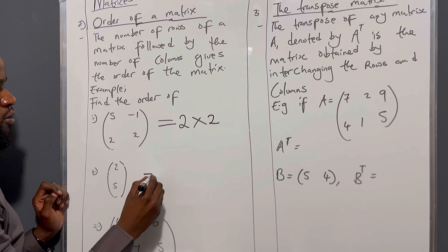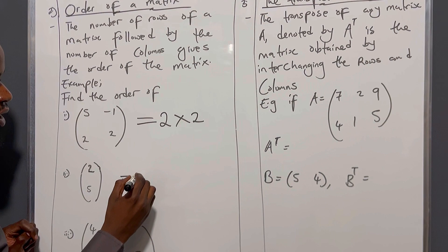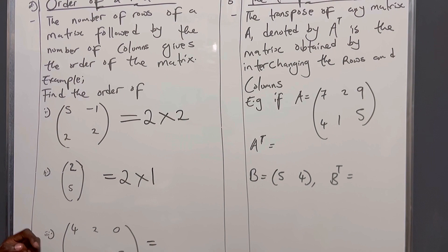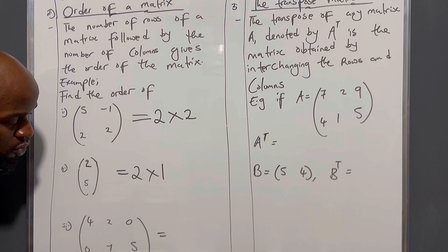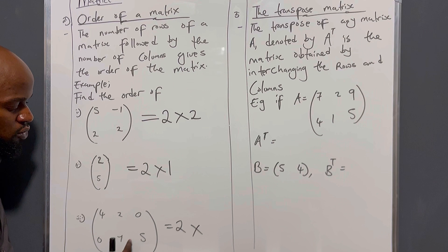Next example: the matrix with elements 2 and 5. How many rows? Two. How many columns? One. So it is two by one — easy. You always start with the row and end with the column. For the next matrix, there are two rows and three columns, so the order is two by three. That is how you find the order of a matrix.